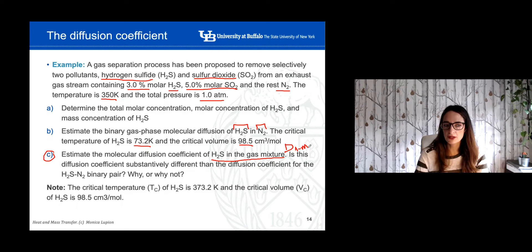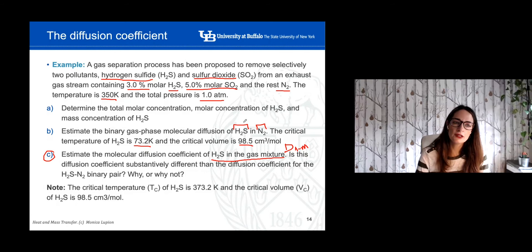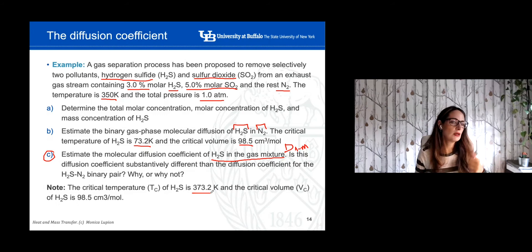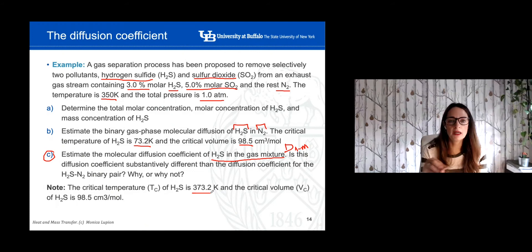The third section asks for the molecular diffusion coefficient of hydrogen sulfide in the gas mixture — what we just discussed. You have to discuss how this diffusion coefficient differs from the binary hydrogen sulfide–nitrogen coefficient. The critical temperature and critical volume are given. The first thing to do is identify the different elements — call them A, B, C or 1, 2, 3 — then determine the diffusion coefficient of hydrogen sulfide in nitrogen and the diffusion coefficient of hydrogen sulfide in the gas mixture. Try to solve it; the solution is posted.